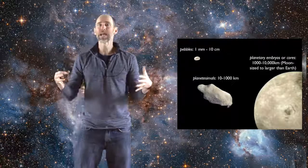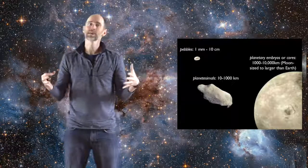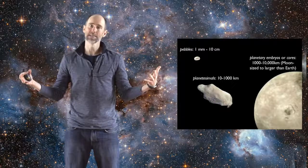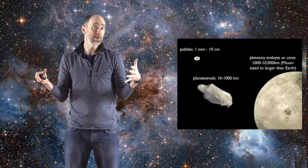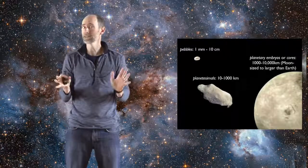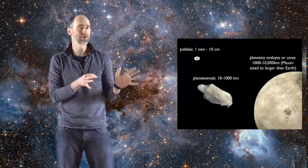Larger objects we call planetary embryos, or sometimes planetary cores. These objects are at least 1,000 kilometers in size. The planetary embryos where the terrestrial planets were forming, we think, were about Mars size, that is about a tenth of the mass of Earth.